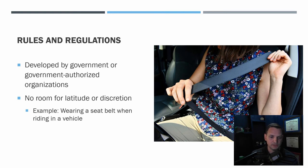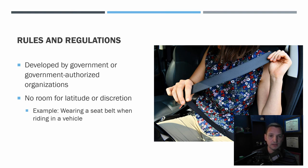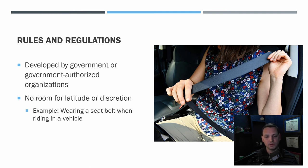Rules and regulations are developed by a government or government-authorized organization. There's no room for latitude or discretion — these are black and white. One example is wearing a seatbelt in a vehicle: you're either wearing it or you're not. There are many laws applied to companies and businesses, and as a frontline leader, you want to make sure those rules and regulations are followed and enforced.